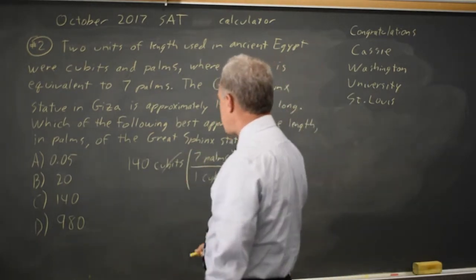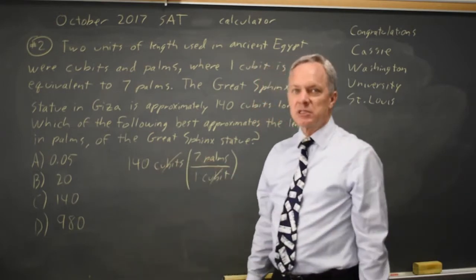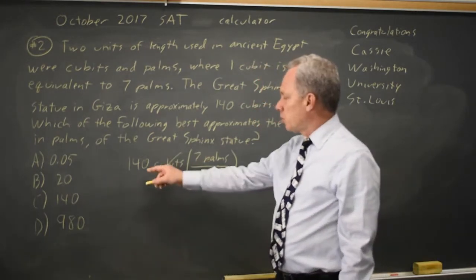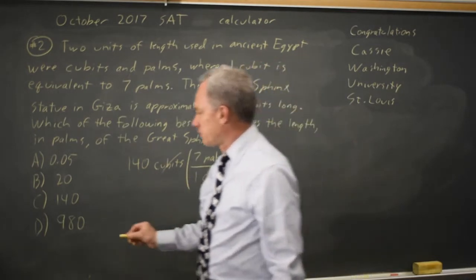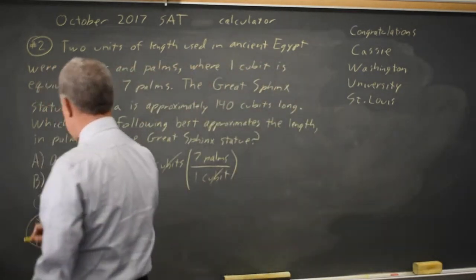Cubits cancel and I have 140 times seven palms, which is certainly more than 100 times seven, which would be 700. So choice D is the only answer that could be large enough.